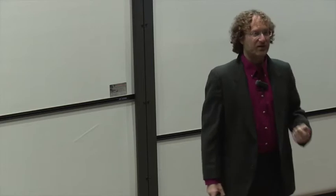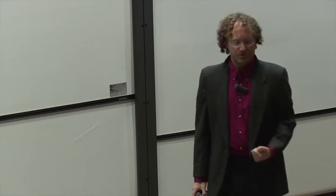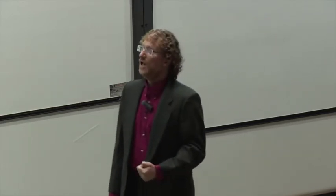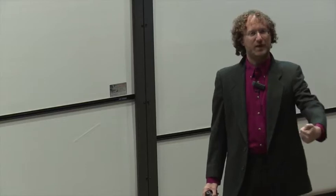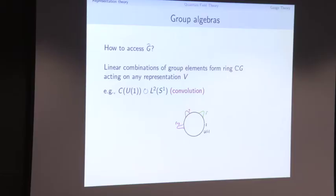How do we access G-hat? We use the group algebra. If I have a group acting on a representation, I get many more operators acting than just group elements: I can take linear combinations, or continuous linear combinations of group elements. These are called the group algebra. Different classes of group algebra appear in different settings of representation theory.